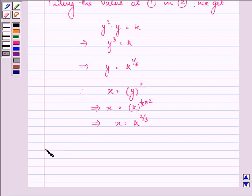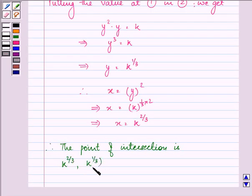Therefore, the point of intersection is k raised to the power 2/3 comma k raised to the power 1/3, which we denote as (x, y).